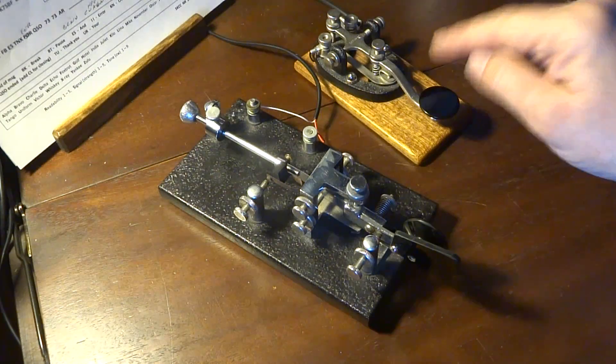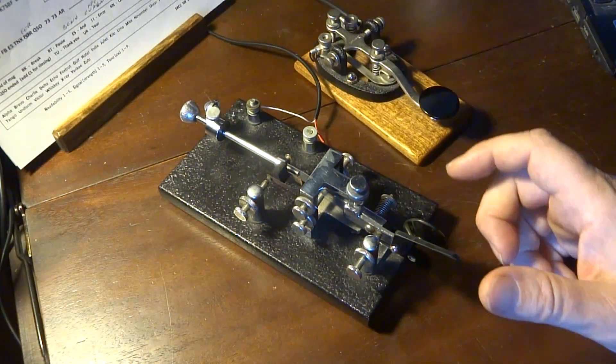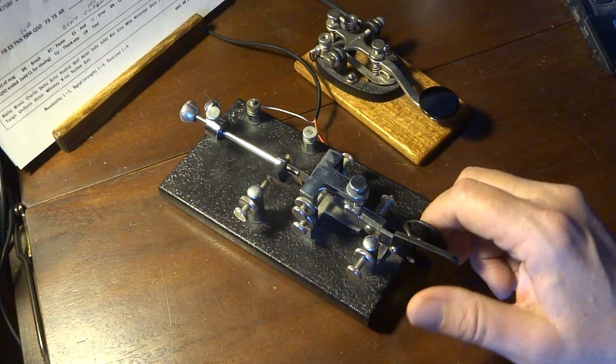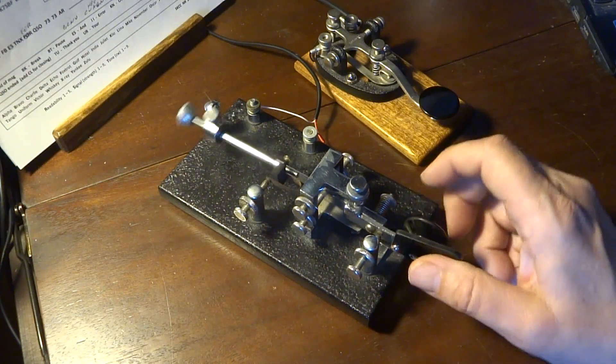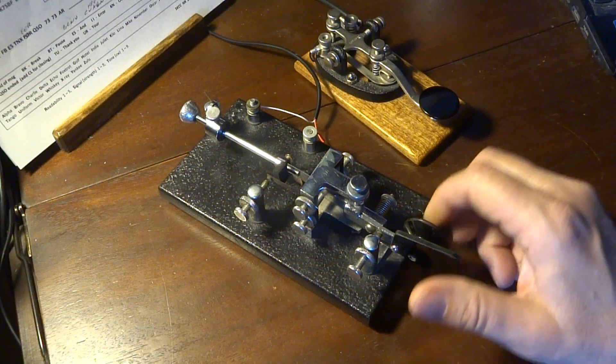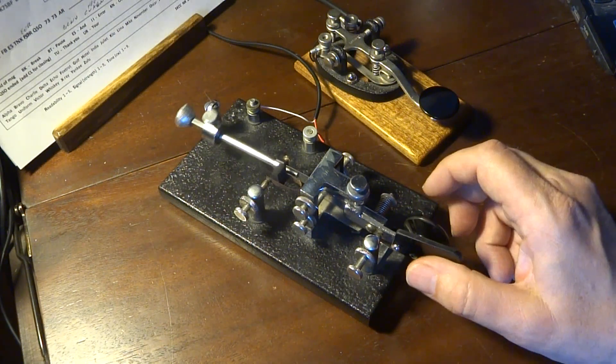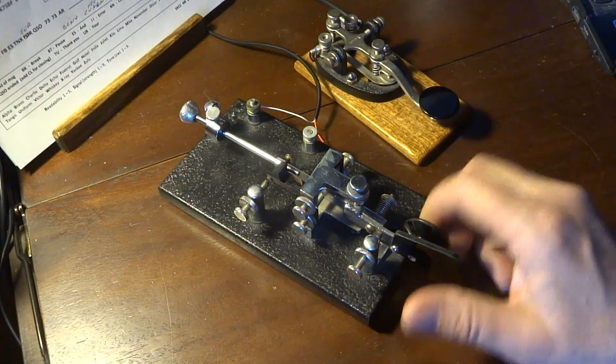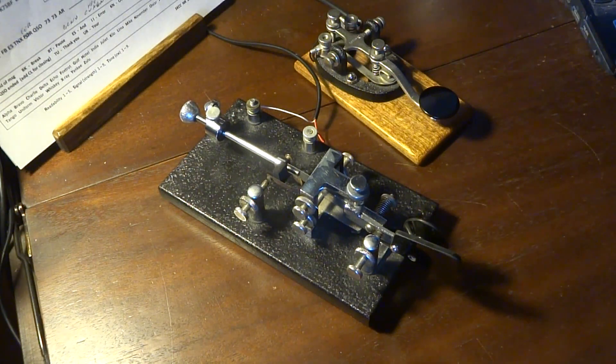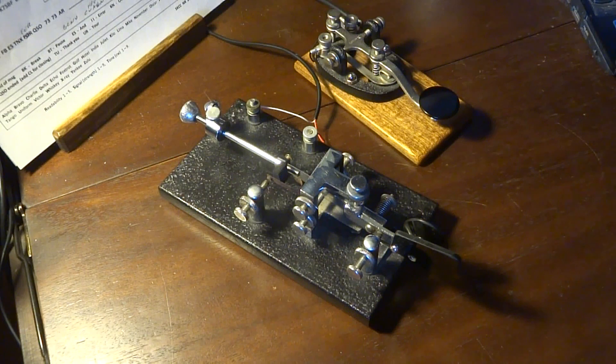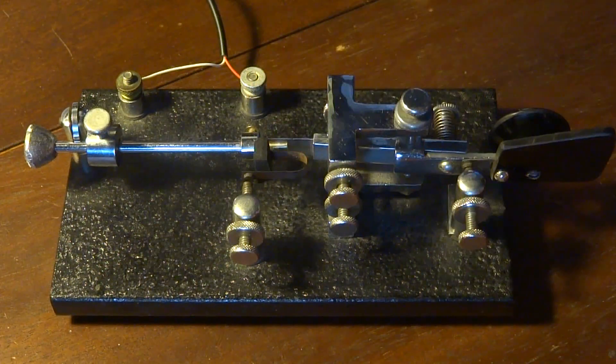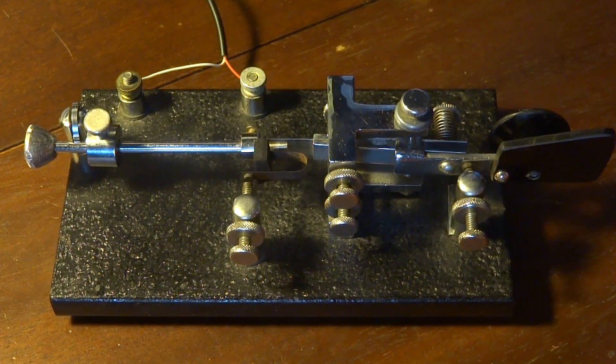So remember I did this calling CQ on this. Let me try it on this bug, and you can hear the difference. You can see I'm not very good at this bug yet. I just got it yesterday, and I've been practicing a little bit with it. Well, there you have it. The SpeedX semi-automatic bug from the 1930s. That's all for right now. Thanks so much for watching.